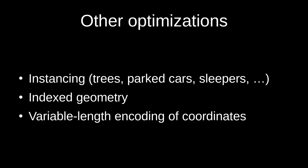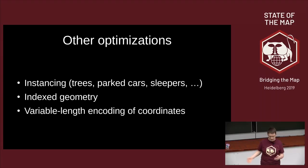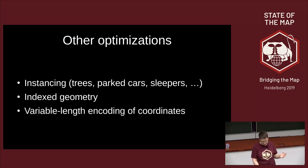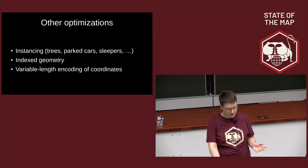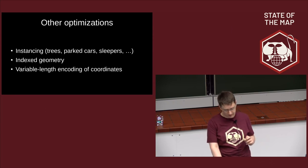Other optimizations include instancing — if there's a tree, we don't send the full geometry for every single instance. Instead, we tell the client what the tree looks like and provide a list of places where trees are, and the client copies them wherever needed. This is also used for parked cars, railway sleepers, and many other objects with only one or a few variations. Other optimizations include indexed geometry and variable-length encoding of coordinates, which is made easily possible by Protobuf.